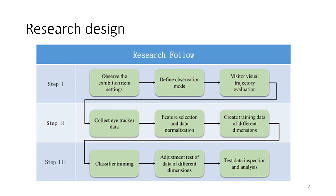Training data for different dimensions is established through data normalization. Stage 3 is result verification and analysis. The classifier's training and training results evaluation are carried out on different dimensions of data. The cross-variation analysis program finds out the appropriate data dimension and finally verifies the classification result of the test data, conducting in-depth discussion and analysis of the results.